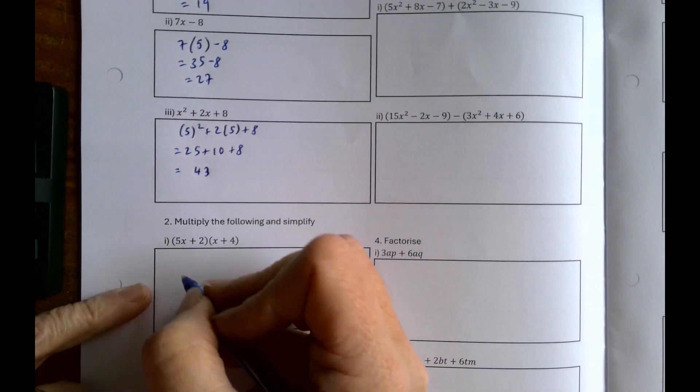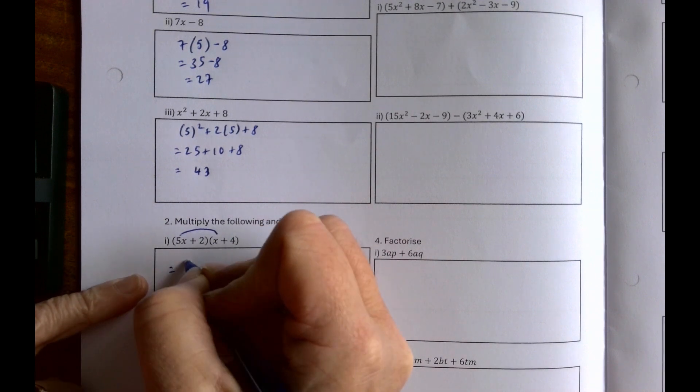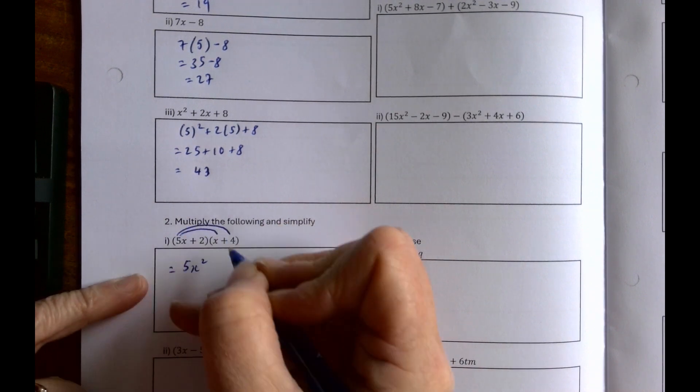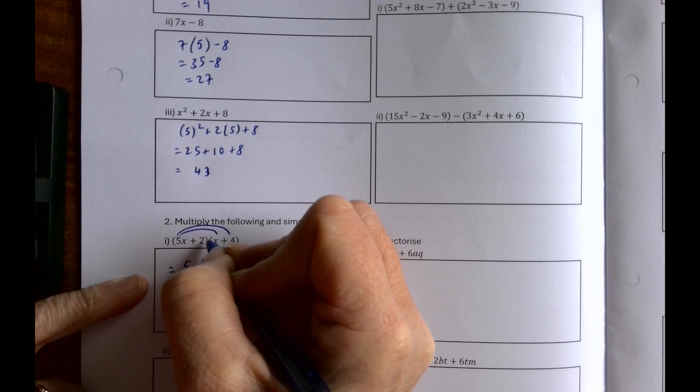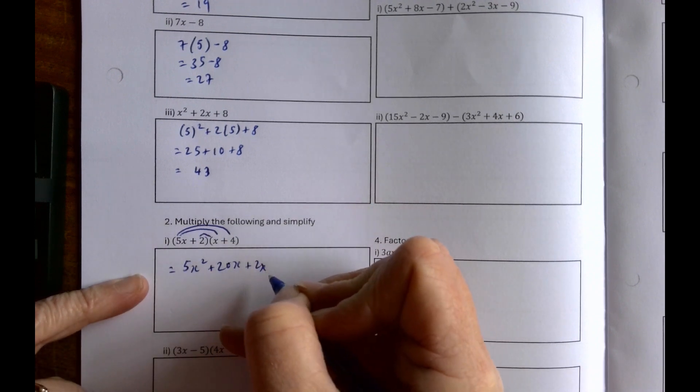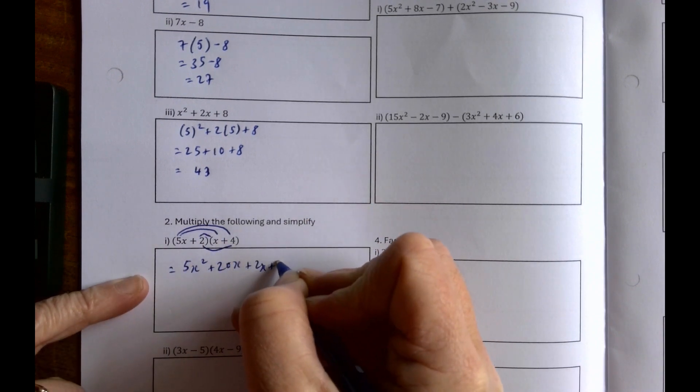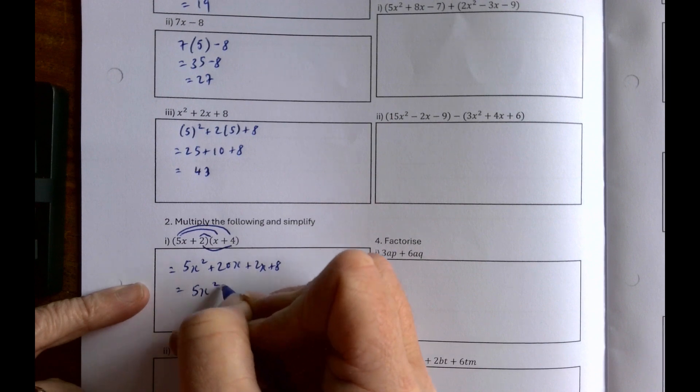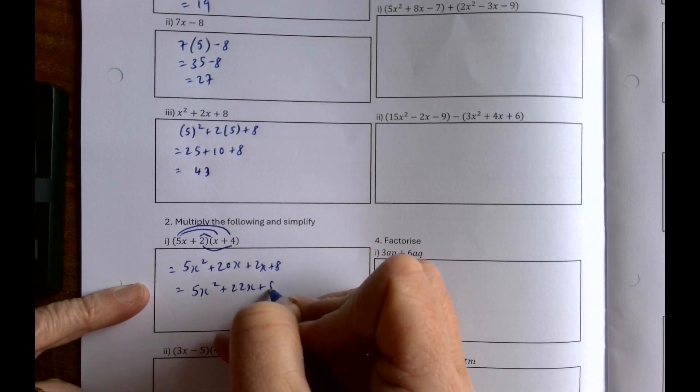Multiply the following and simplify. So I've got 5x by x is 5x squared, 5x by 4 is 20x, 2 by x is 2x, and 2 by 4 is 8. So 5x squared plus 22x plus 8.